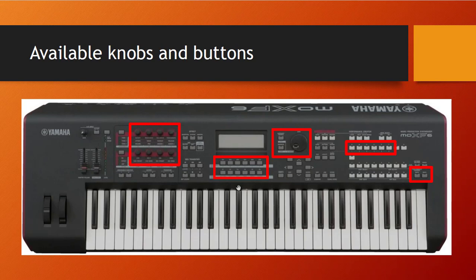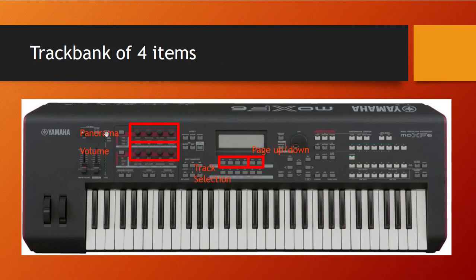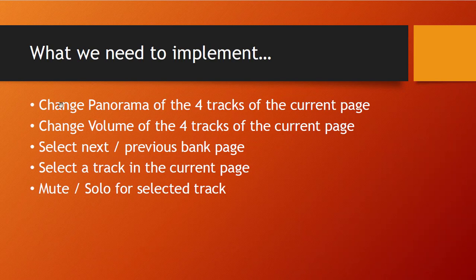We need to decide how to use these knobs and buttons to control tracks. Normally you'd go with eight, but since they behave differently I thought: why not go with four? Another reason is we have six buttons here, so for direct selection of eight we'd be missing two. With four tracks, we can use the upper knobs for panorama and the lower ones for volume, have direct selection of four tracks using those buttons, and use the last two buttons to move the page up and down.